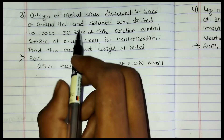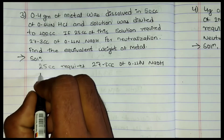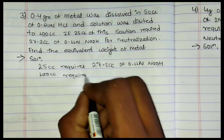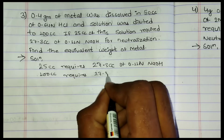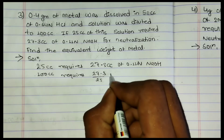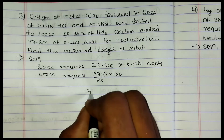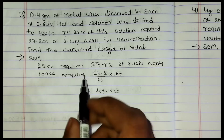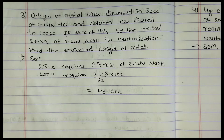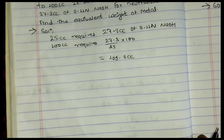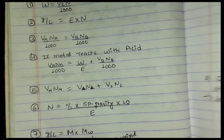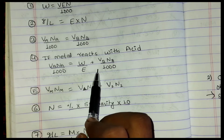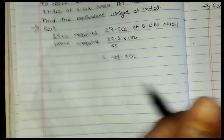Since 25 cc of the diluted solution requires 27.3 cc of 0.11N acid, for 100 cc of solution the equivalent volume of base required = (27.3 × 100) / 25 = 109.2 cc. Now applying the formula to find the equivalent weight.